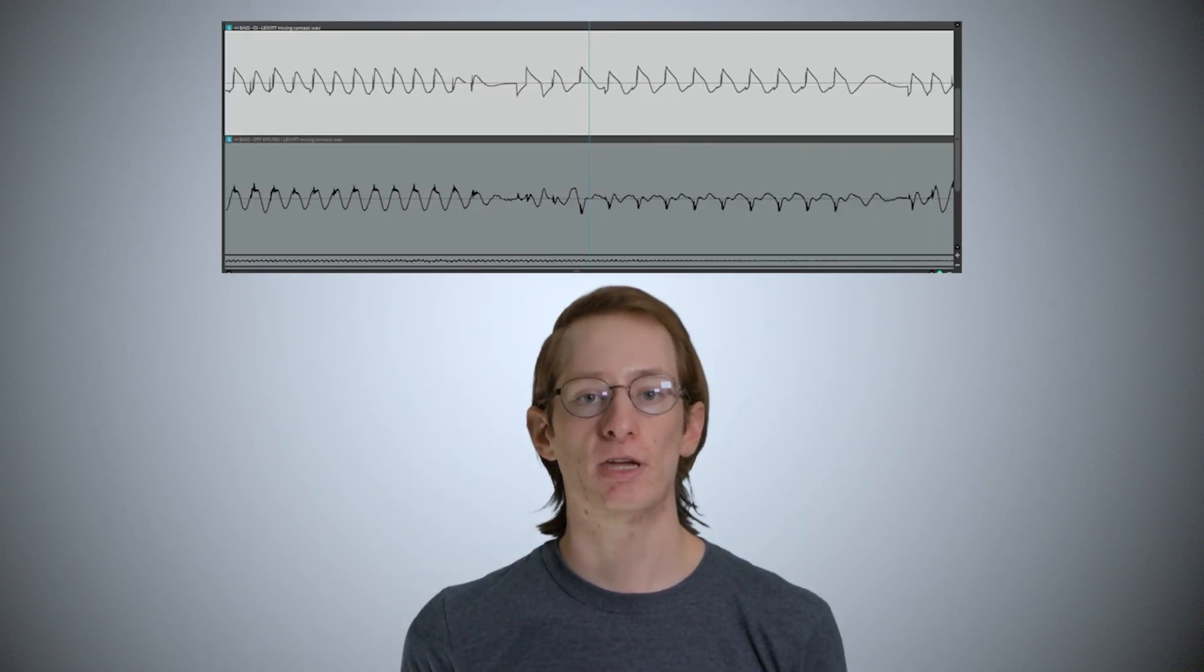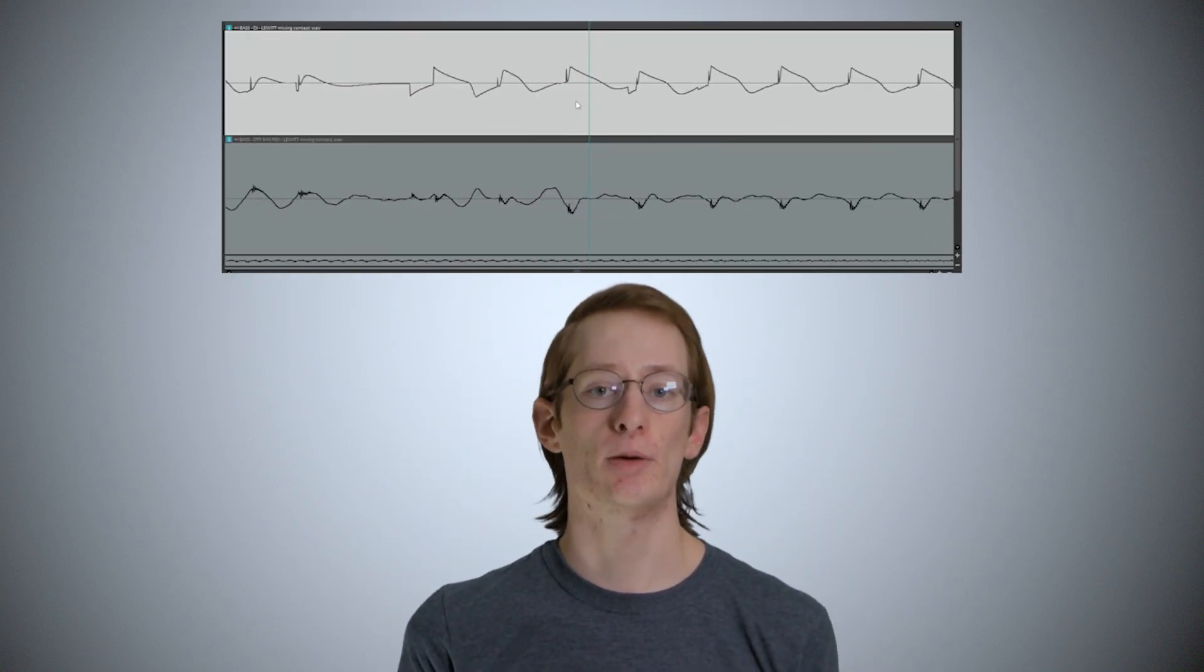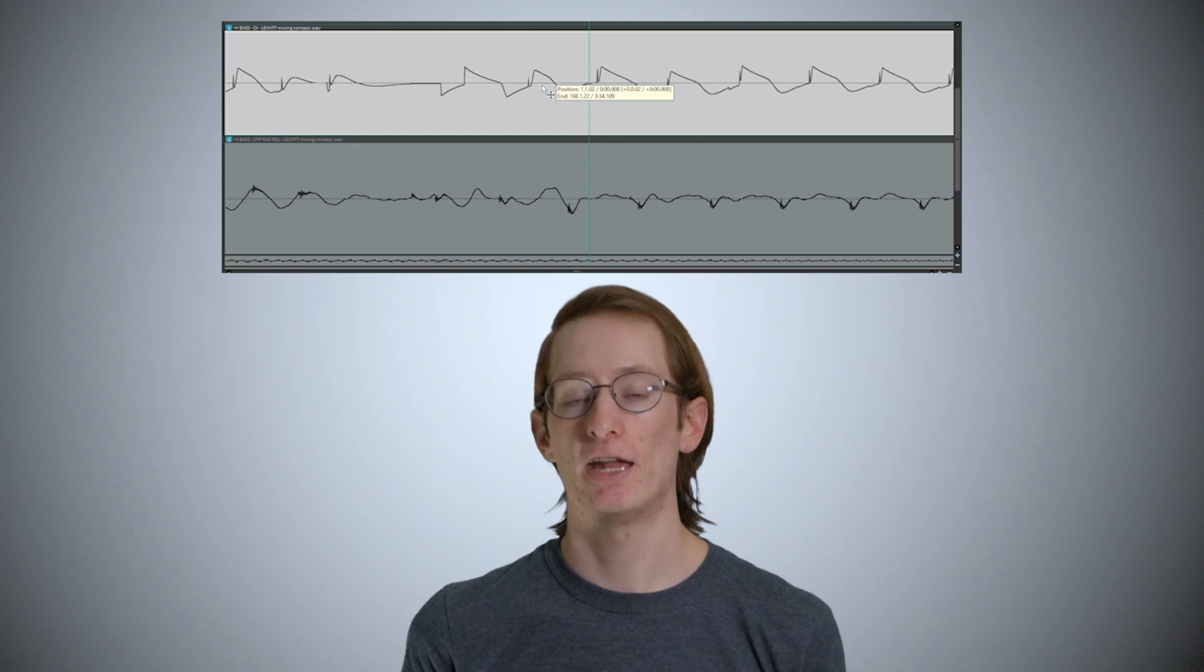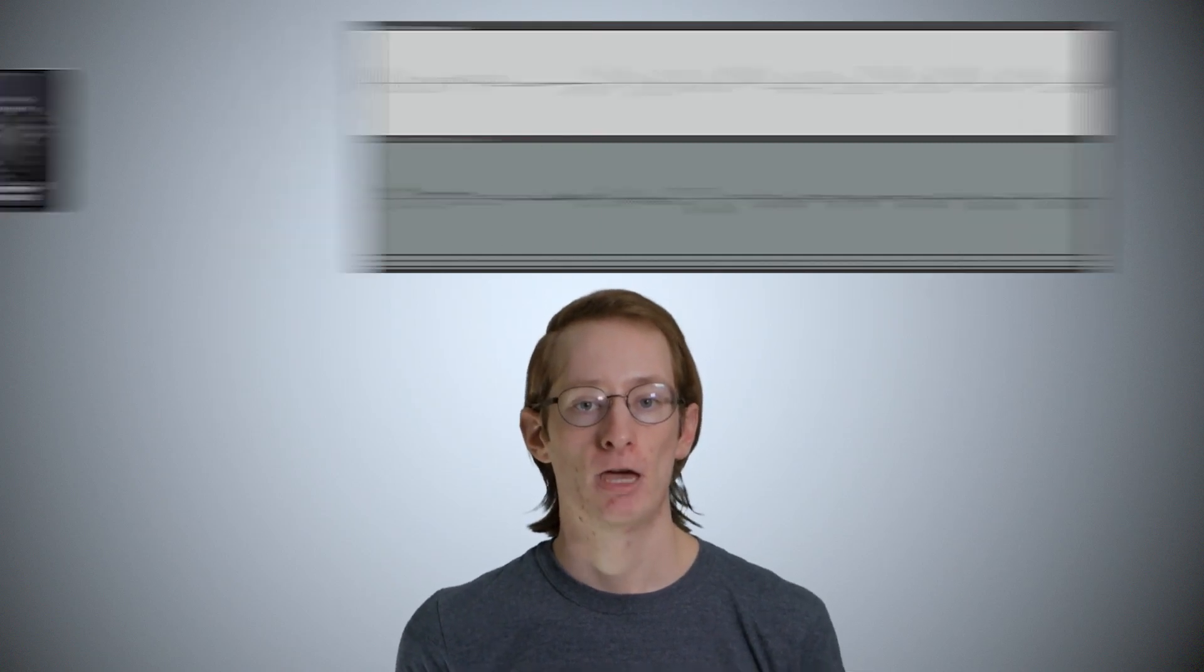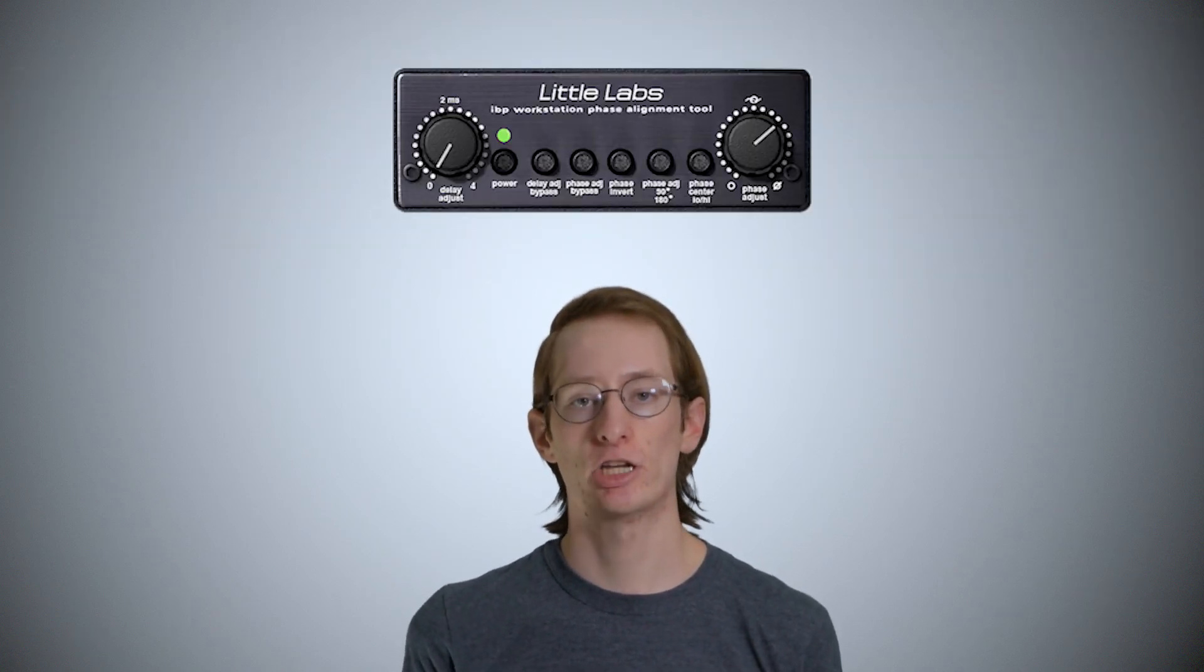Fortunately, fixing comb filtering when you don't want it is relatively easy. For two microphone sources, it can be as easy as zooming in with your DAW to look closely at the waveforms and adjusting them so they line up. There are also several tools out there which can automatically fix phase issues for you.